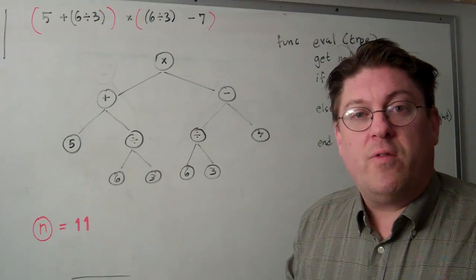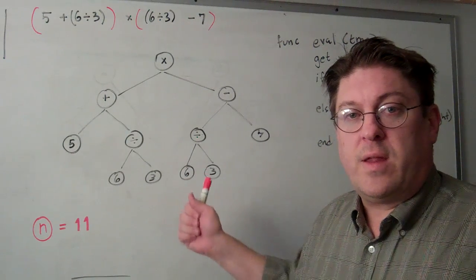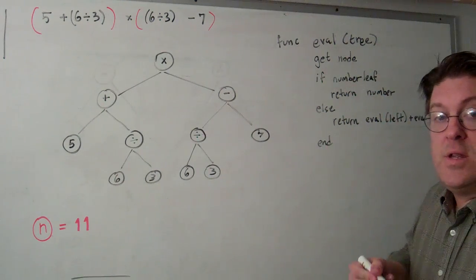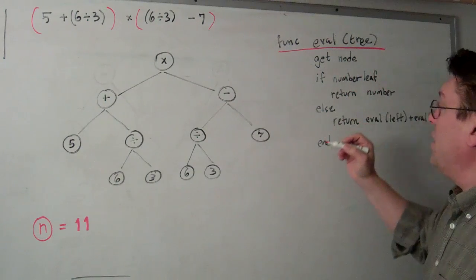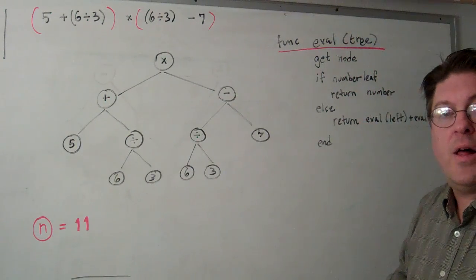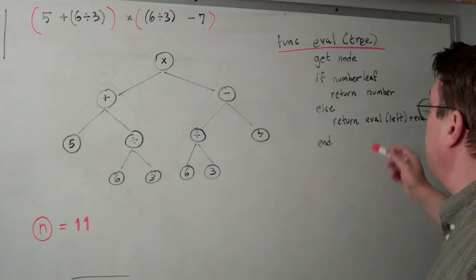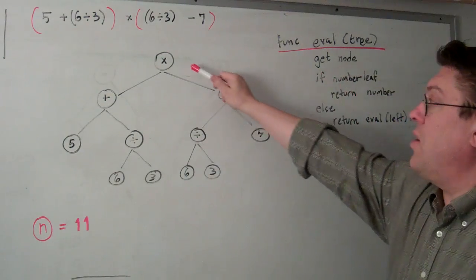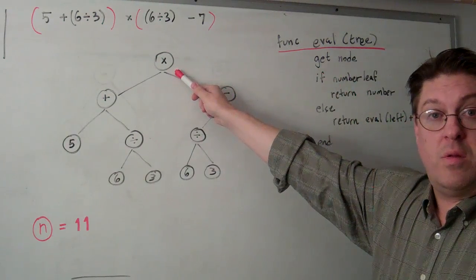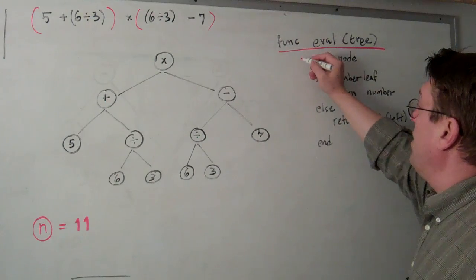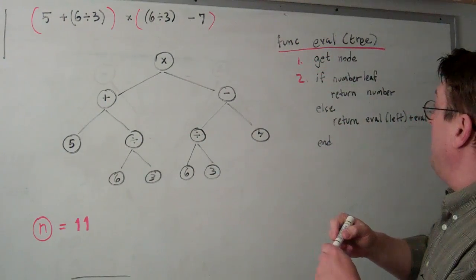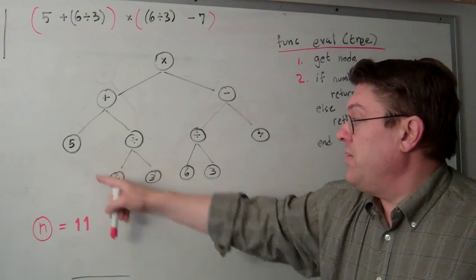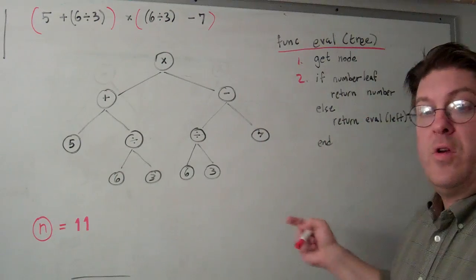Now the question is how do we write an O(n) algorithm to evaluate that expression or any expression of that form? Imagine that you have a function called eval. Basically the function would be a recursive function where you get the node. So that's step one. Step two: if the node is a number leaf, a leaf node with a number in it, then return the number.